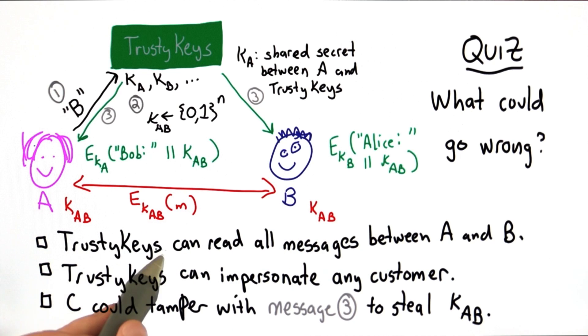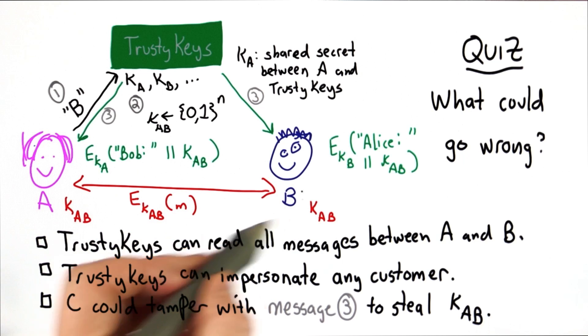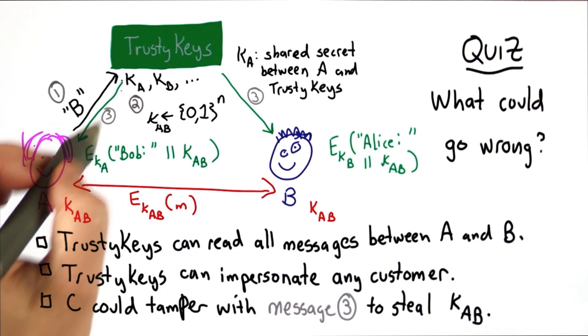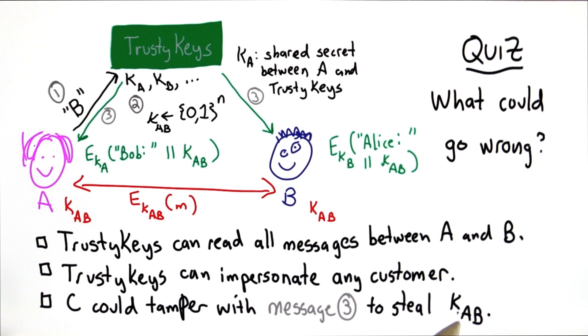So the choices are TrustyKeys can read all the messages that happen between A and B over their encrypted channel. TrustyKeys can impersonate any customer that shares a key with TrustyKeys. And some evil party C could tamper with messages in step 3 to steal the key AB and set up a different key between Alice and Bob and then steal their traffic.